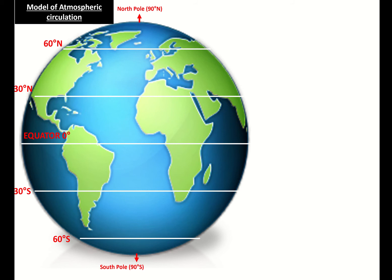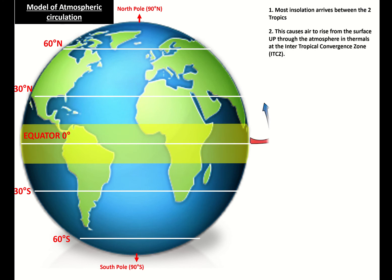Now all of that sets up this model of atmospheric circulation where most insolation arrives between the two tropics. And that causes air to rise up through the atmosphere in thermals at something called the intertropical convergence zone. That gives us huge cumulonimbus clouds. We've got a big rain belt there between the two tropics. We've got lots of tropical storms there, which comes in with your hurricanes.